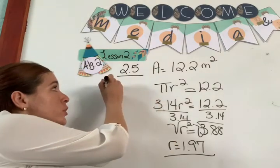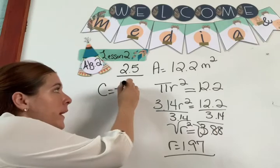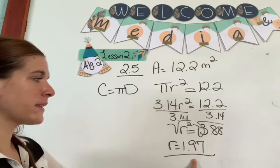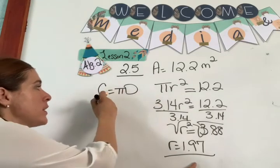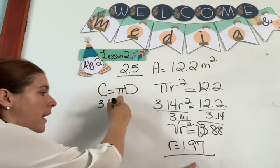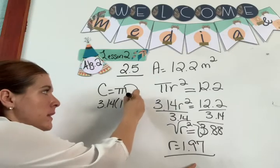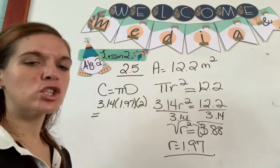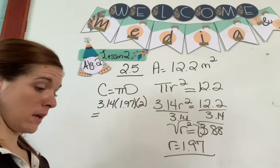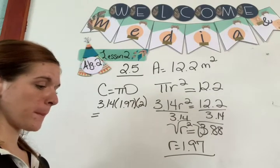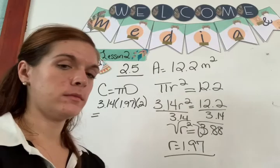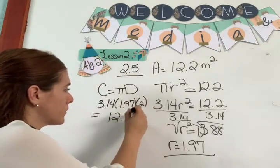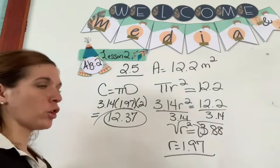Let's go to the circumference. Circumference equals pi times D. How do you get D? D equals 1.97 times 2. So: 3.14 times 1.97 times 2 equals 12.37. And that is your circumference.